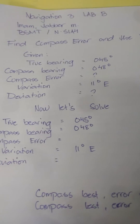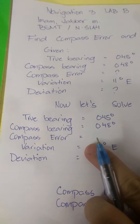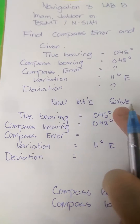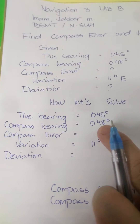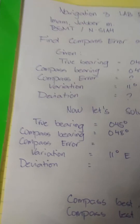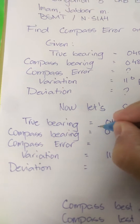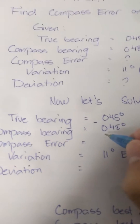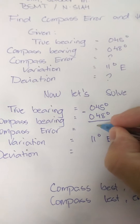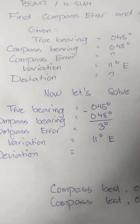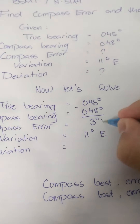Okay, now let's solve. True bearing is 045 degrees, and compass bearing is 048 degrees. Now let's subtract, and the result is 3 degrees west,